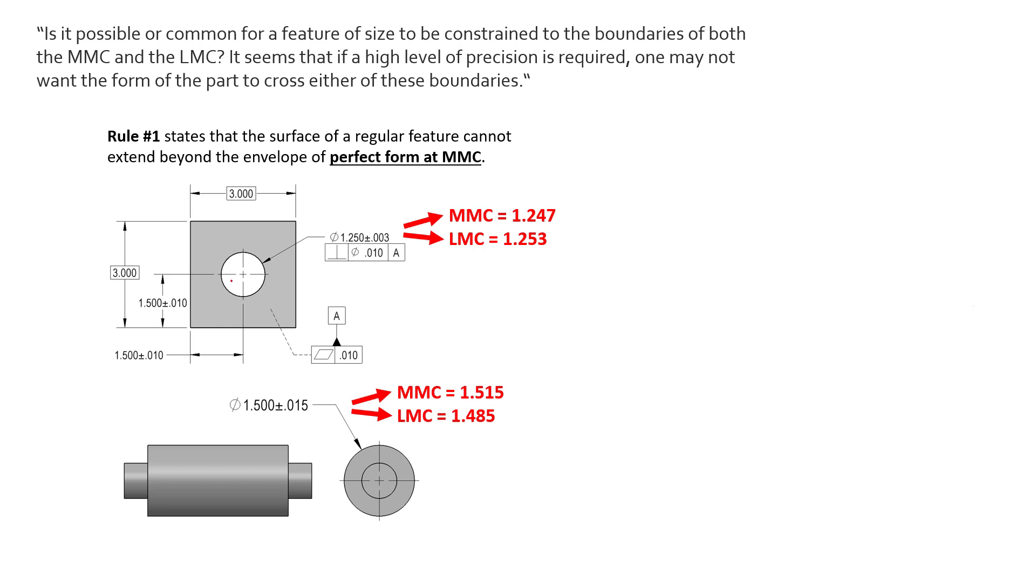exists is when this diameter shrinks. So the smallest diameter is going to be our MMC size, and the largest diameter is going to be our LMC size.